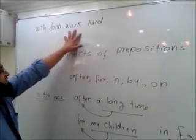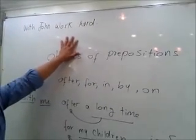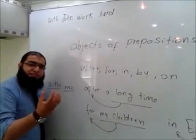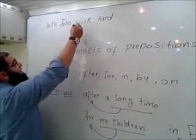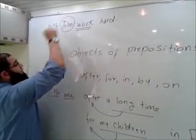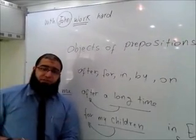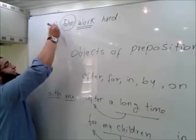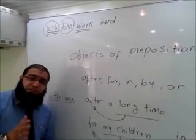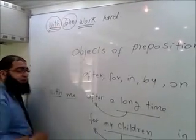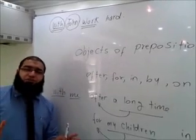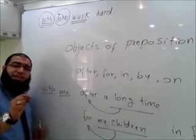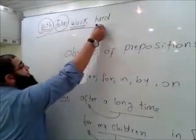When we look at this sentence: 'With John, work hard.' We said in skill number one that we need to find a subject and verb in the sentence. We can see there is a verb here. But when we look at John, the question is: is John a subject? The answer is no. John is not a subject, because it is preceded by a preposition. This preposition makes John an object, not a subject. So whenever we have a noun or pronoun after a preposition, it can never be a subject. So this sentence is incorrect.